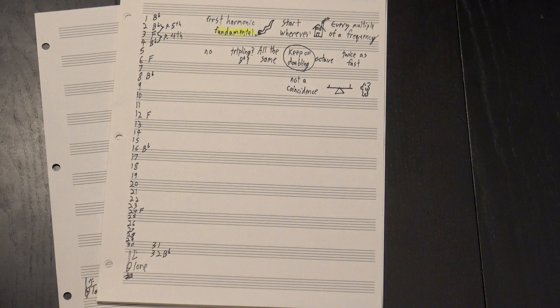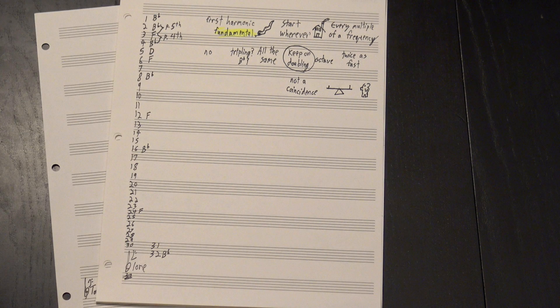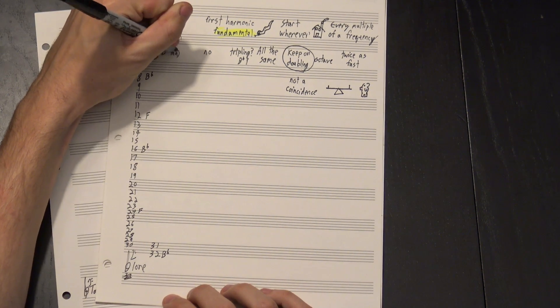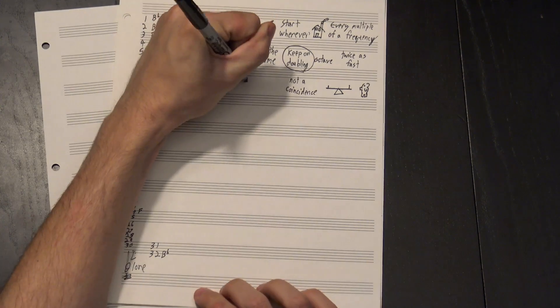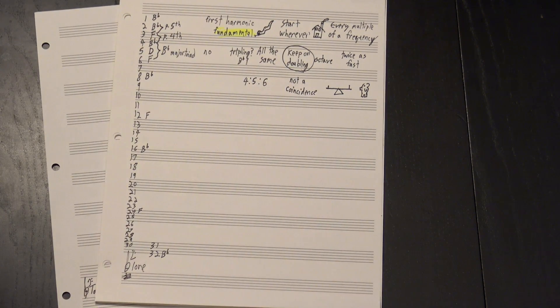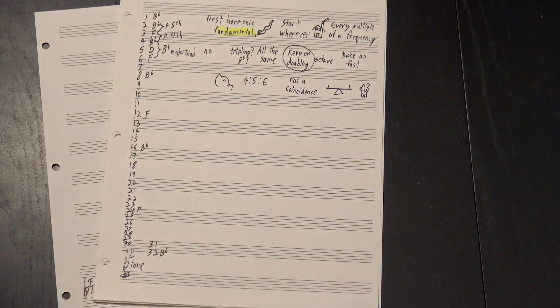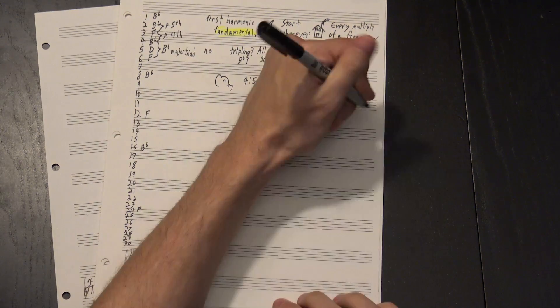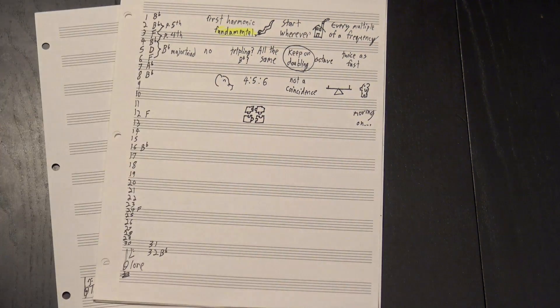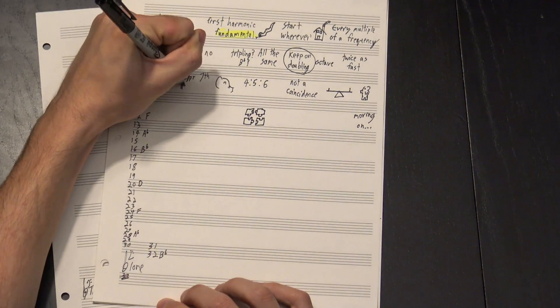Moving on, we come to the fifth harmonic, which in this case is a D, giving us another interesting structure. These three notes make up a Bb major triad, and that simple 4-5-6 ratio is part of what makes major triads sound so good. They just fit together like puzzle pieces. We round out this octave with an Ab, the seventh harmonic, and a minor seventh above our root.